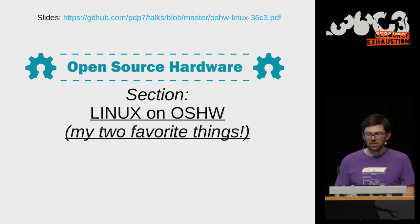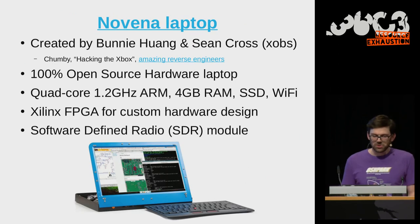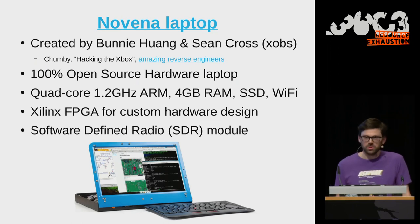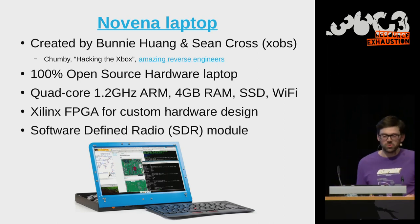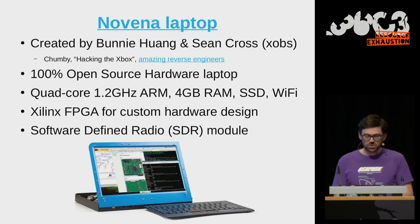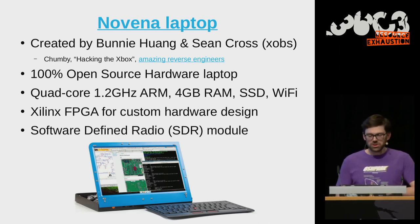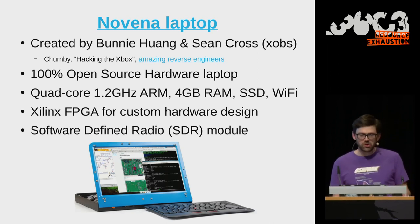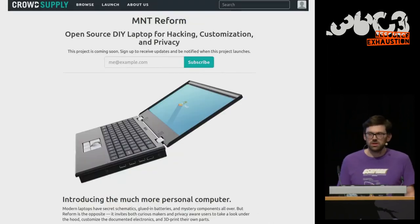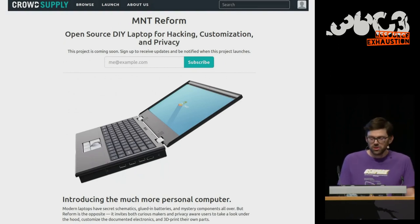The topic of this talk is Linux on open source hardware, and those are my two favorite things. One of my favorite projects was developed by Bunny and Sean Cross — they gave a talk on the first day of the congress. What I see here is a complete open source laptop: everything in this laptop is open source. It came out about four or five years ago and it's a laptop you can use every day. It also has some extra features like an FPGA and a Software Defined Radio. If you go to the CDC area here at the congress, you can also check out the Reform laptop — also a complete open source hardware laptop.